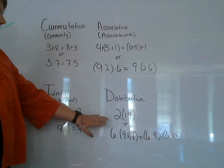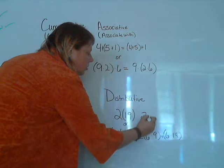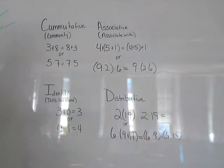Next, we have the distributive property. Now in our book, they have an example like this that says 2 times 19. And all that really means is 2 times 19, and then you figure it out. Simplify the expression.